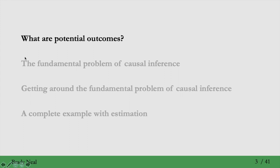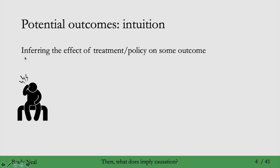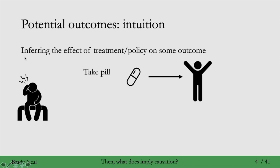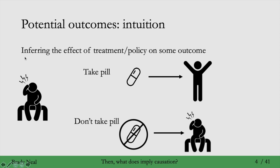Let's get into what are potential outcomes. This will be a review of the material we saw in the preview lecture, so if you saw that lecture, this first section will be a review, but later sections will be new material. Causal inference is about inferring the effect of some treatment or policy on some outcome. Consider the case that you have a headache. If you were to take a pill, it turns out that your headache would go away. And if you were to not take the pill, you would still have your headache. If this were the case, then you would say that the pill probably has a causal effect on your headache.